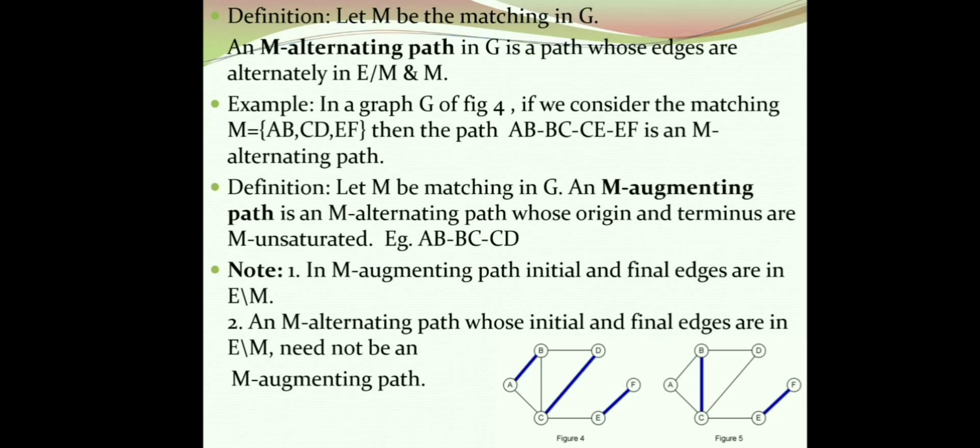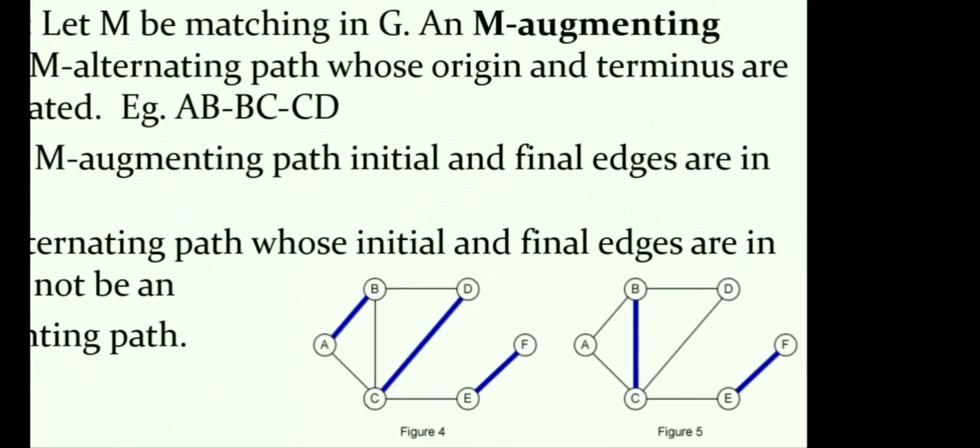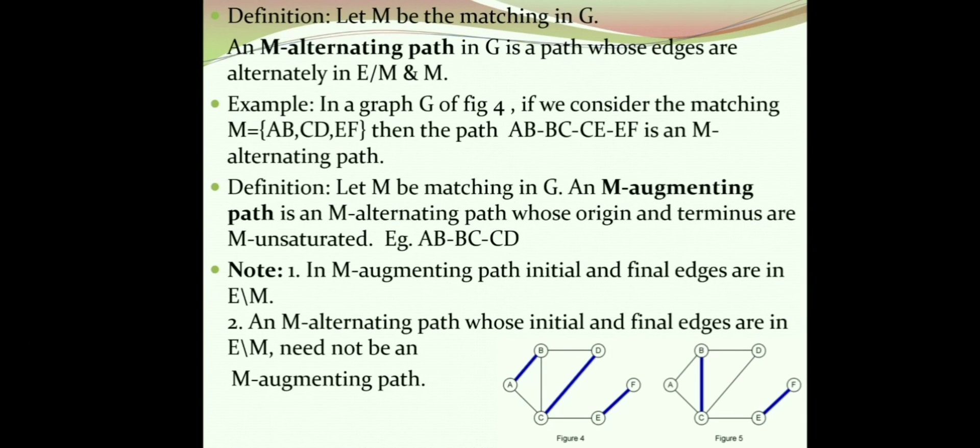So the origin is A and the terminus is D. Both are M-unsaturated. So note: in M-augmenting path, initial and final edges are in E minus M. The second point is an M-alternating path whose initial and final edges are in E minus M. In all such cases there need not be an M-augmenting path.